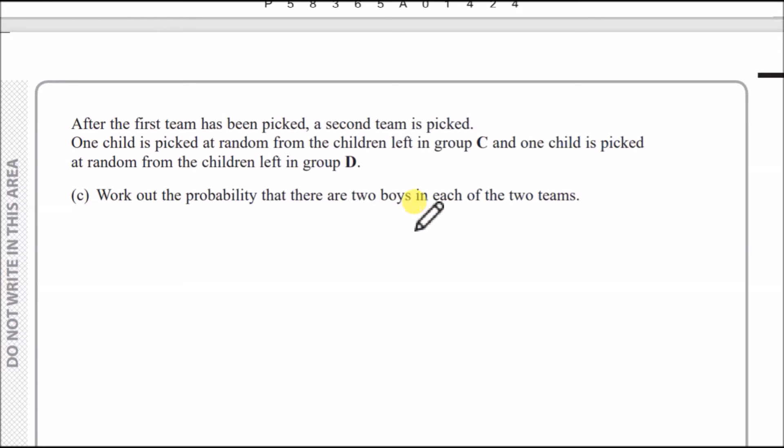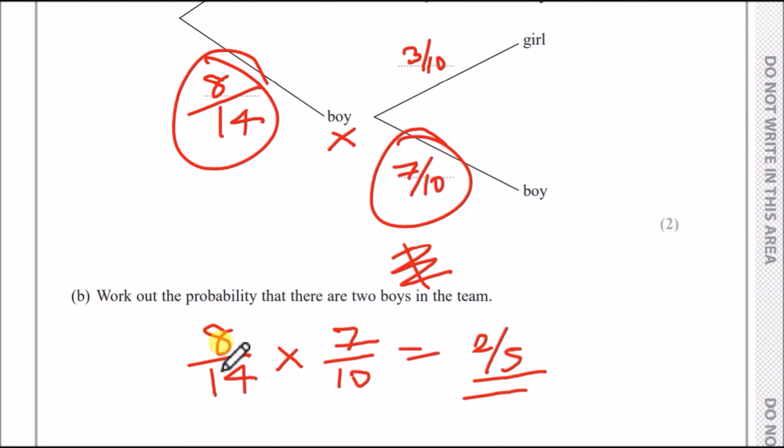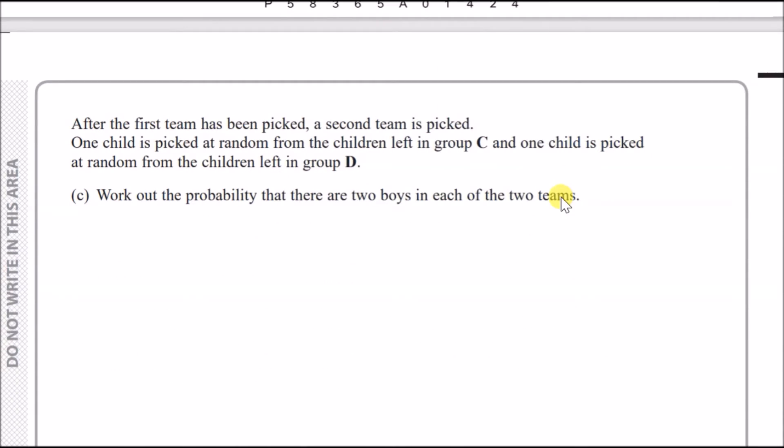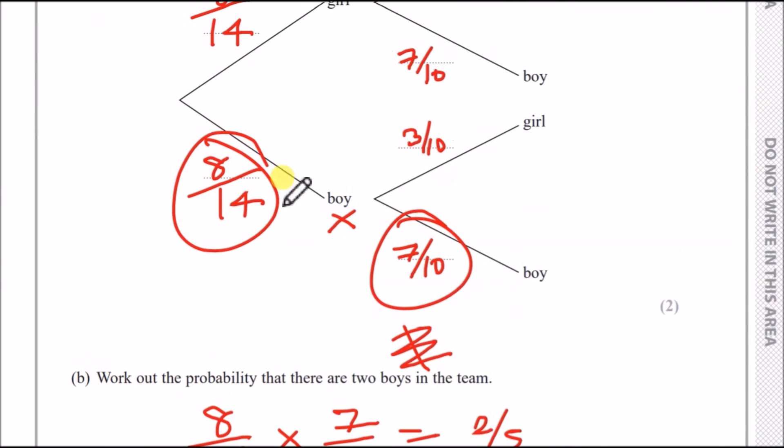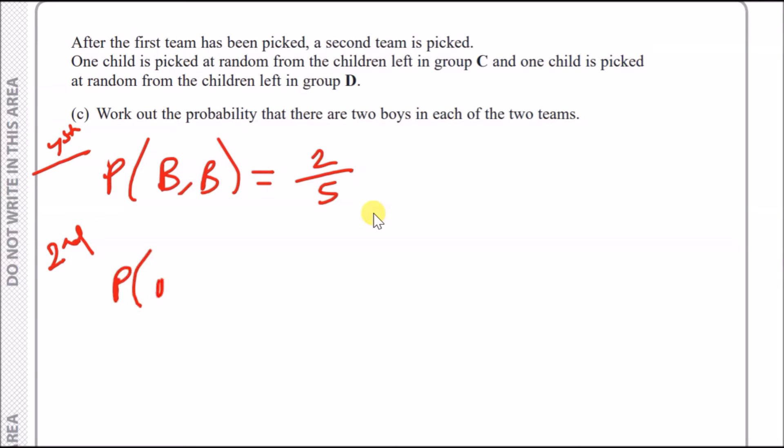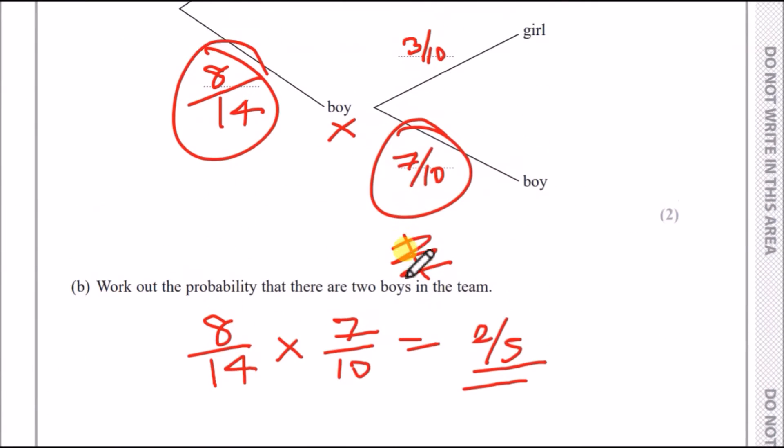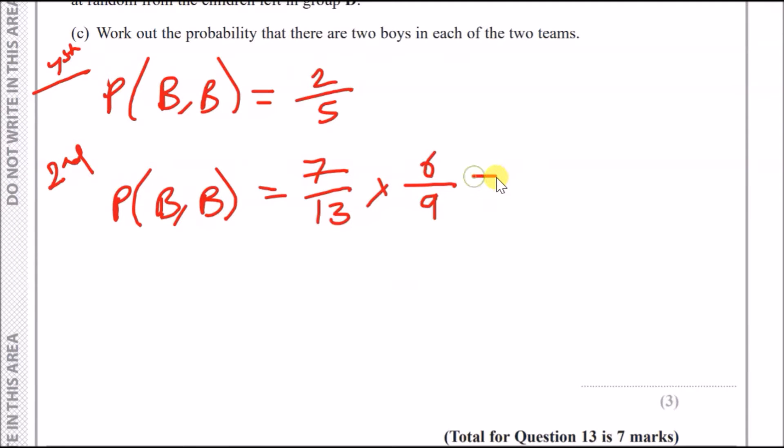Now, work out the probability that there are two boys in each of the two teams. We already said initially that when they pick two boys, we've got two fifths. So for the first set, probability of picking first team of boy and boy, we got two fifths. Now, because you did that already, you're now down to seven boys out of 13. So for the second set, probability of picking boy and boy, you're now down to seven out of 13 for the first group, and we now got six out of nine for the second group. If you type this in the calculator, you should get 14 out of 39.